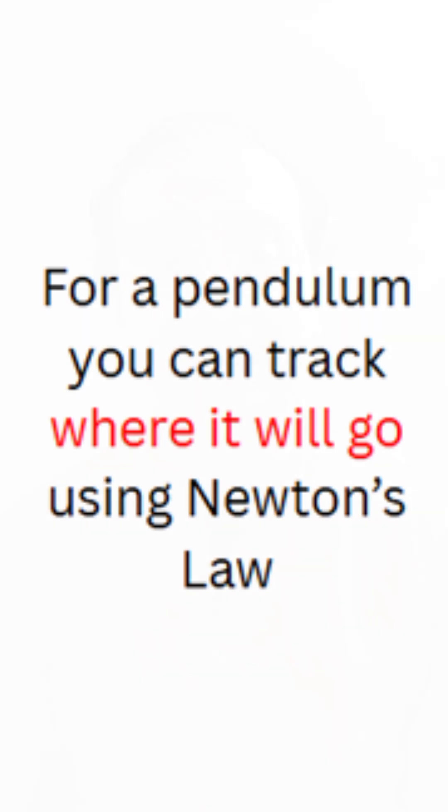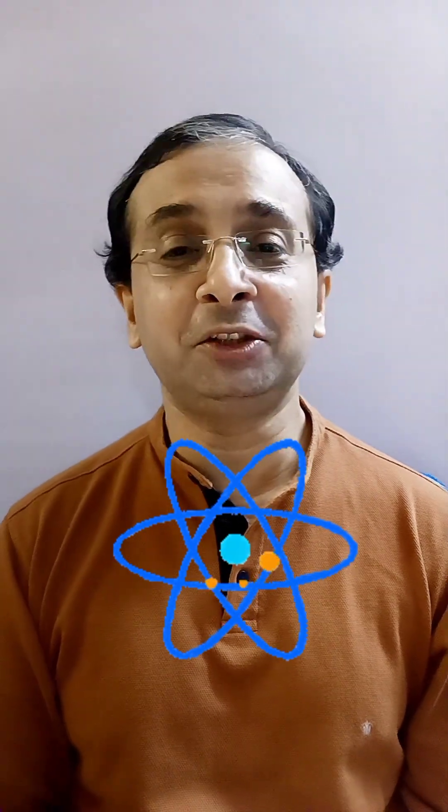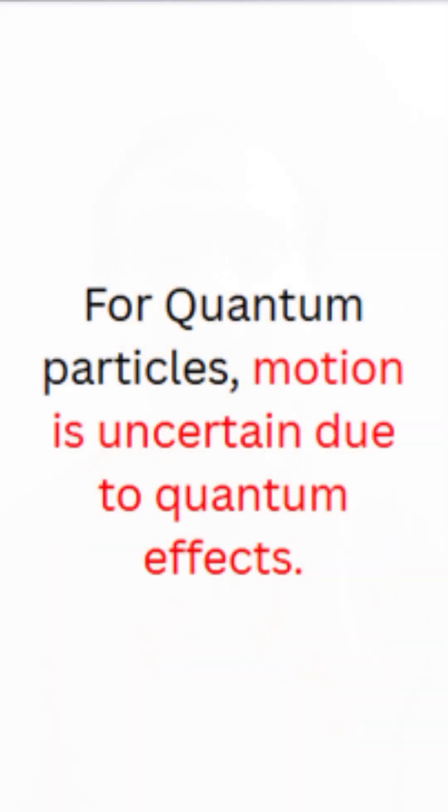Think of a typical classical scenario where you have a pendulum and you know the initial conditions — you can actually predict where it lands, where the pendulum will go. Now think of an electron or any subatomic particle in a box. Because it is quantum physics, you get a lot of uncertainties: wave-particle duality, entanglement, superposition, and many other things.